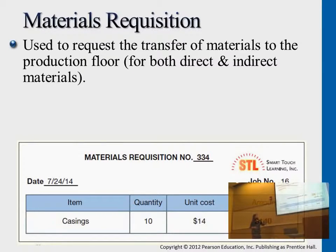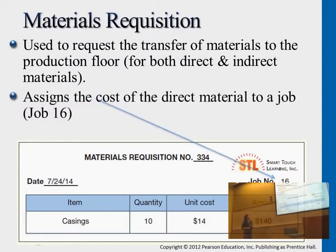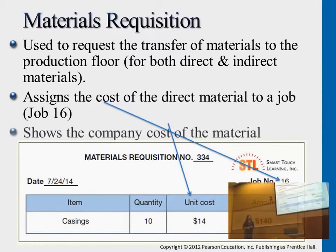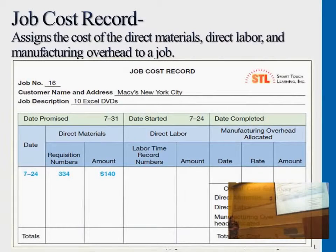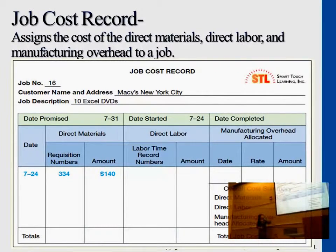The production team requests the materials, the purchasing department sends over the materials to start production, and we determine the cost of the materials. This is just an example, a portion of the direct materials. This direct materials information factors into the job order record — the job order requested by Macy's company for 10 orders of DVD sets. Direct materials for this order is $120. This is the first part completed.